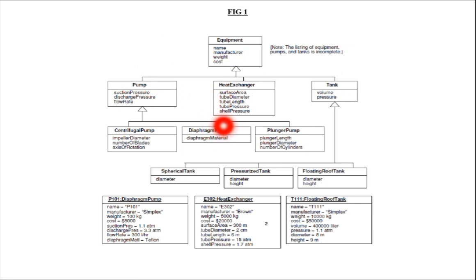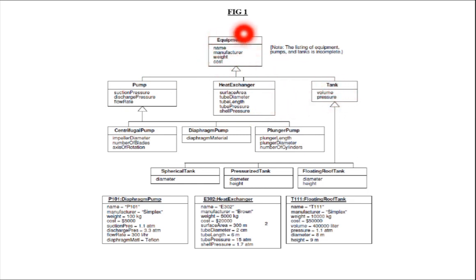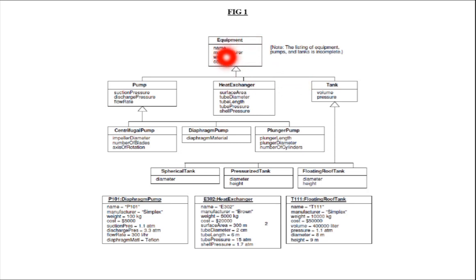Similarly, every subclass — pump, heat exchanger, or tank — can inherit the manufacturer details. Pump manufacturer details, heat exchanger manufacturer details, and tank manufacturer details can all be inherited from the equipment superclass.